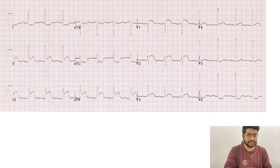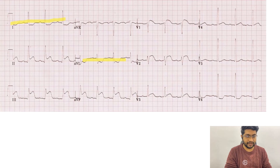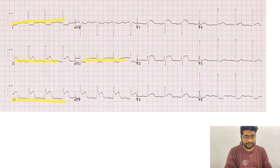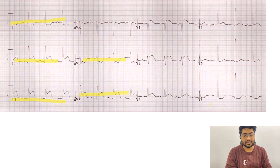Here is another ECG: in lead 1 we have ST segment depression, in lead AVL we have ST segment depression, and we have elevation in lead 2, lead 3, and lead AVF. Then we have a small elevation in lead V1 and lead V2; the rest of the ECG is normal.